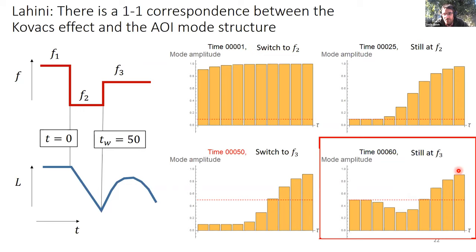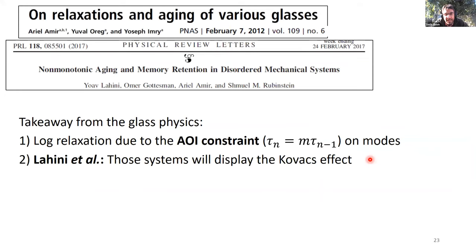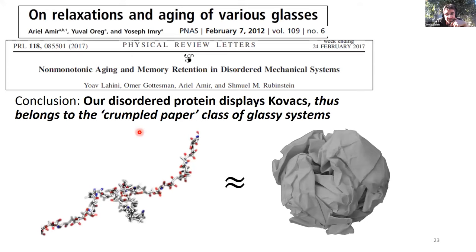And so the glass physics is telling us these two things. There's a log relaxation due to this AOI constraint, number one, and number two, Lahini says that systems with this AOI type mode structure will display the COVAX effect. So in that sense, we say that our disordered protein, because it displays COVAX, belongs to this crumpled paper class of glassy systems.